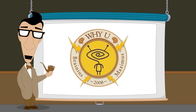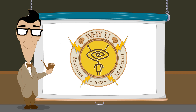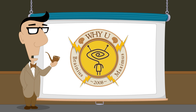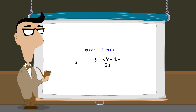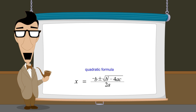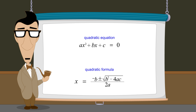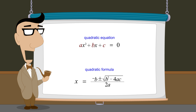Hello, I'm Professor Von Schmohawk and welcome to Why U. In the previous lecture, we introduced the quadratic formula. Given any general form quadratic equation ax-squared plus bx plus c equals zero, the values for the constants a, b, and c are entered into the formula that then produces the solutions to the equation.